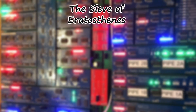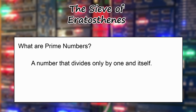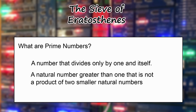Since this algorithm is for calculating prime numbers, let's first have a quick reminder of what they are. The schoolyard description is a number that divides only by one and itself. A more precise dictionary definition is: a natural number greater than one that is not a product of two smaller natural numbers. This description also gives us clues about how we can construct an algorithm for finding them.